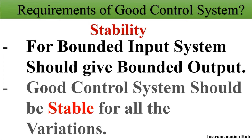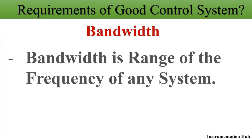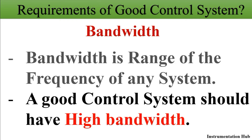The next parameter is bandwidth. Bandwidth is the range of frequencies of a system — how much frequency range the control system can transmit. At any instance, a control system should be able to transmit a high number of frequencies, so a good control system should have high bandwidth.